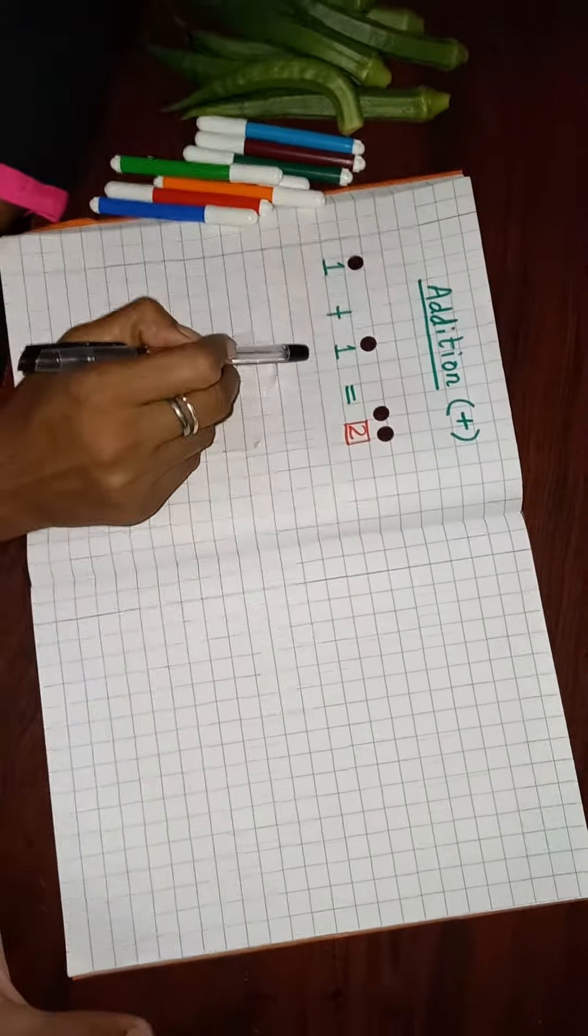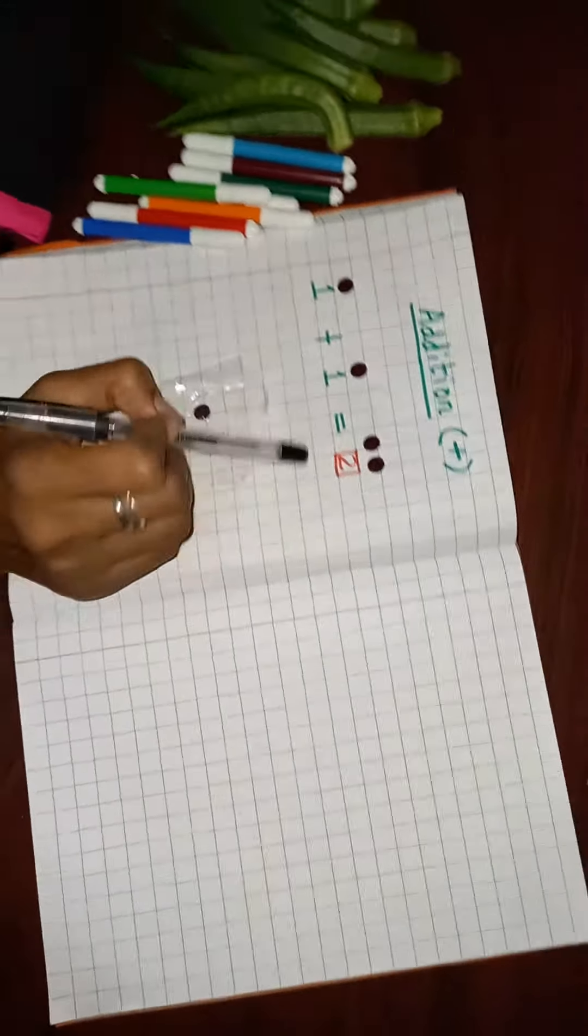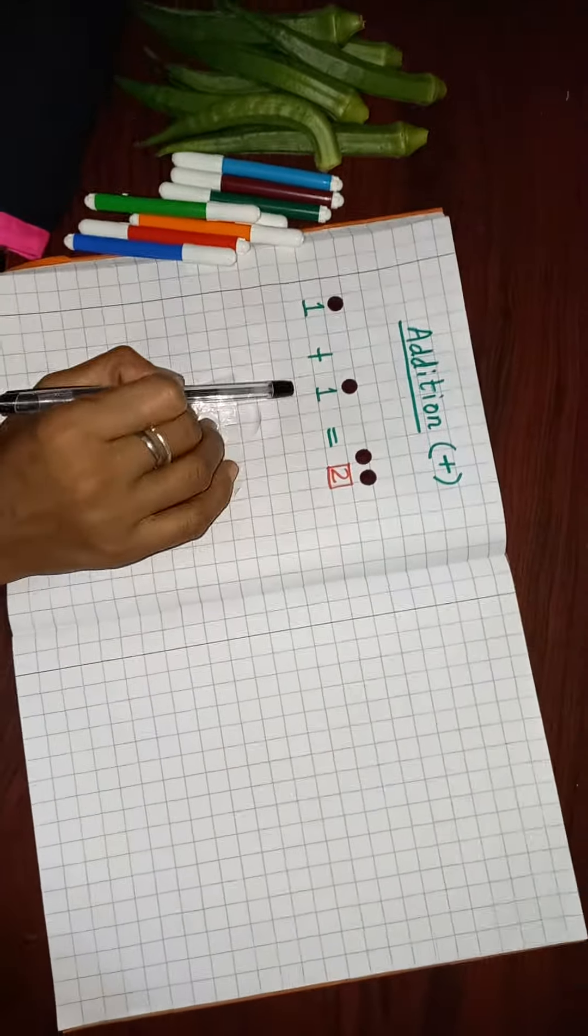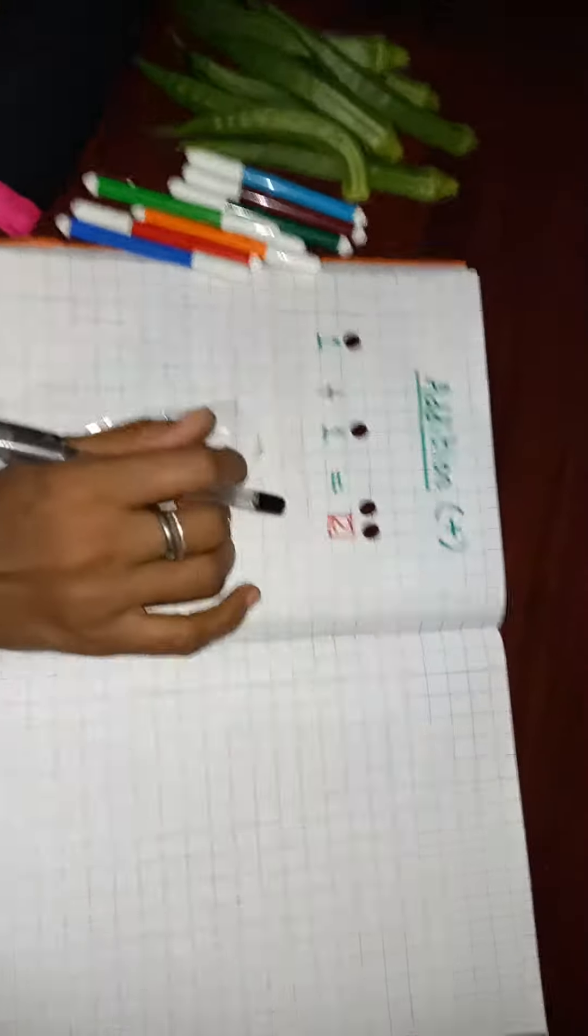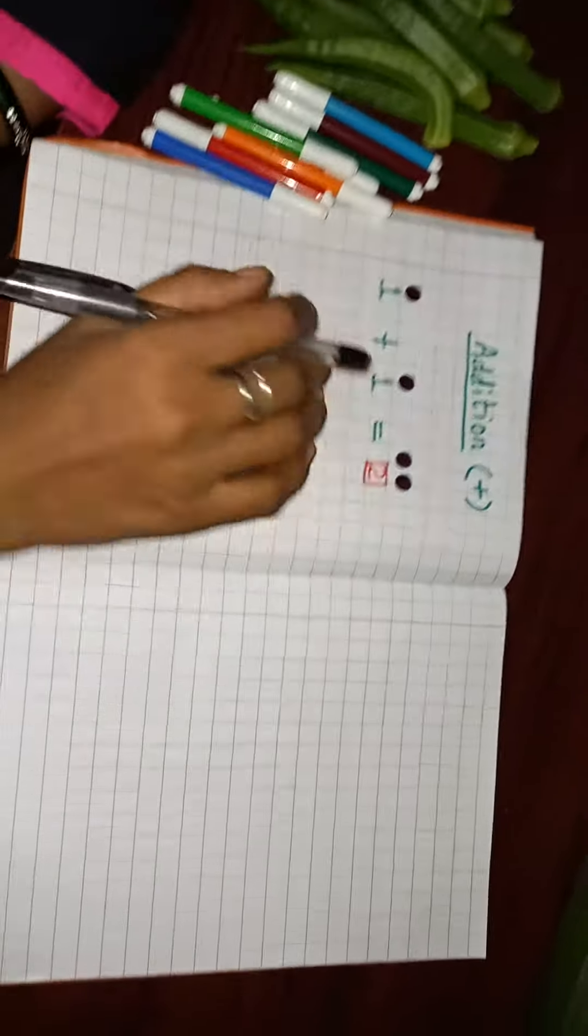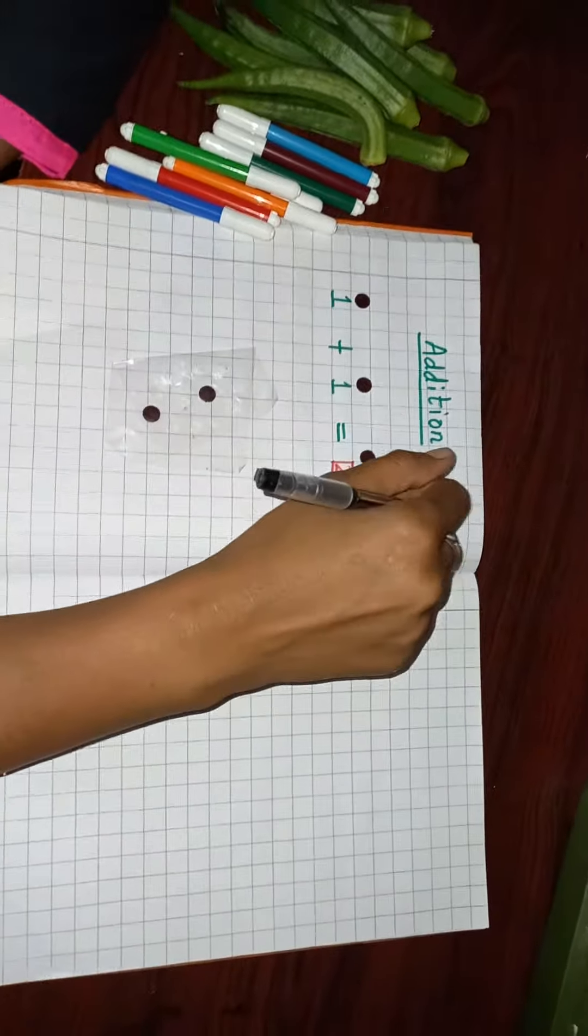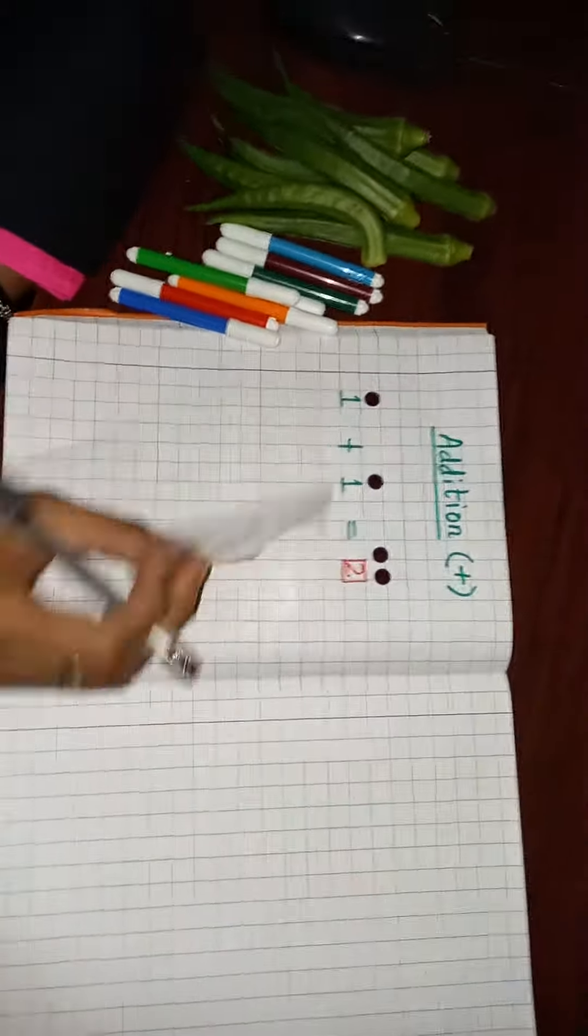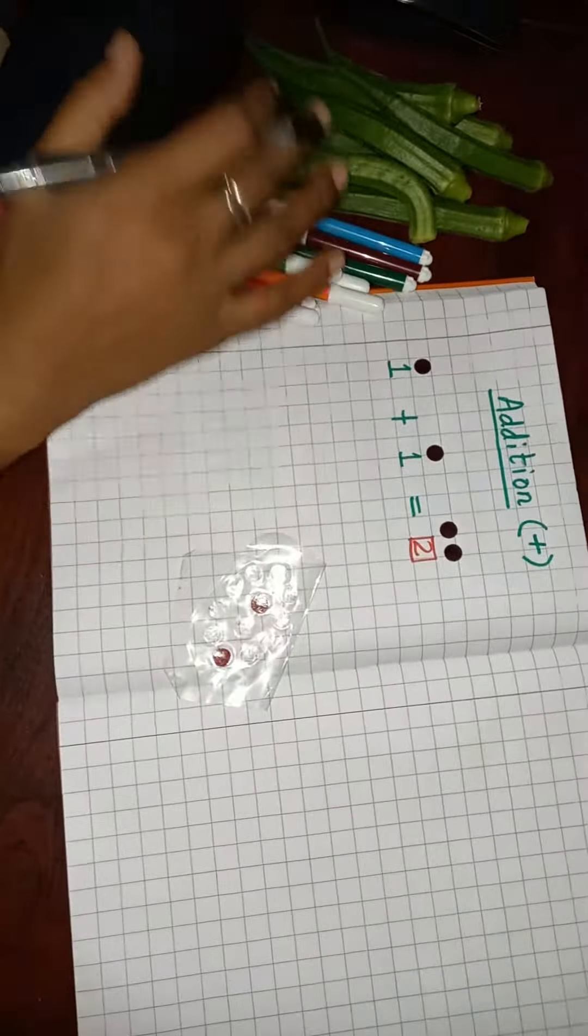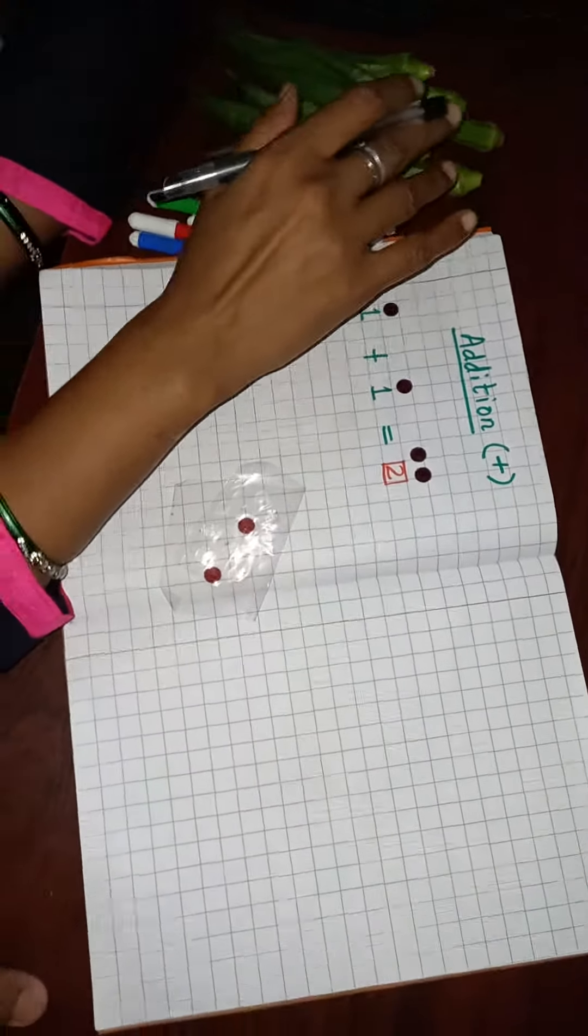Okay children, what is addition? The answer is addition is the total of two or more numbers. We will see some examples like bindis, sketch pens, and lady fingers.